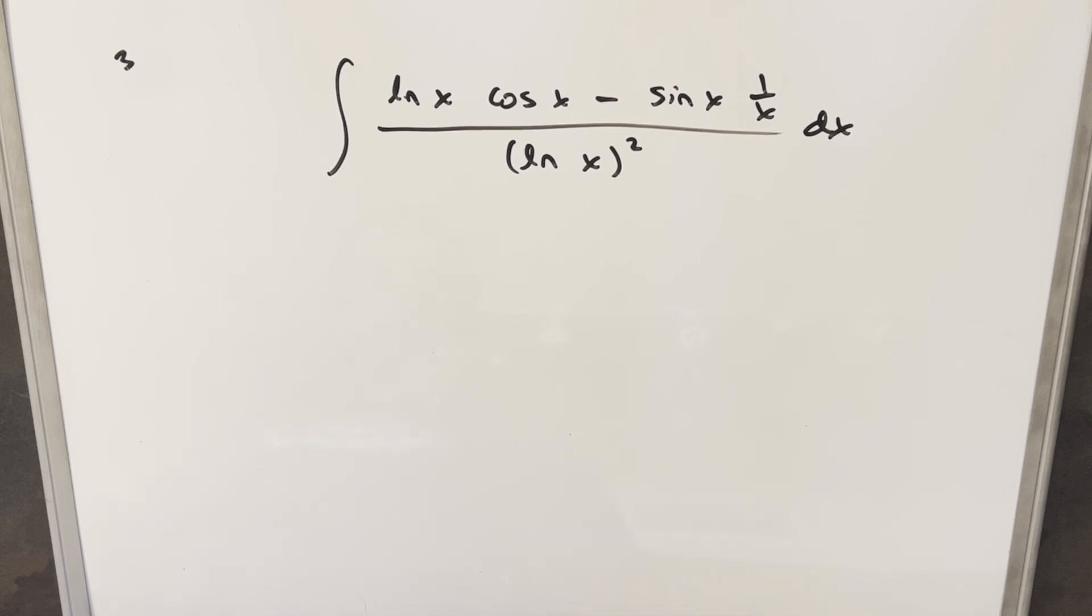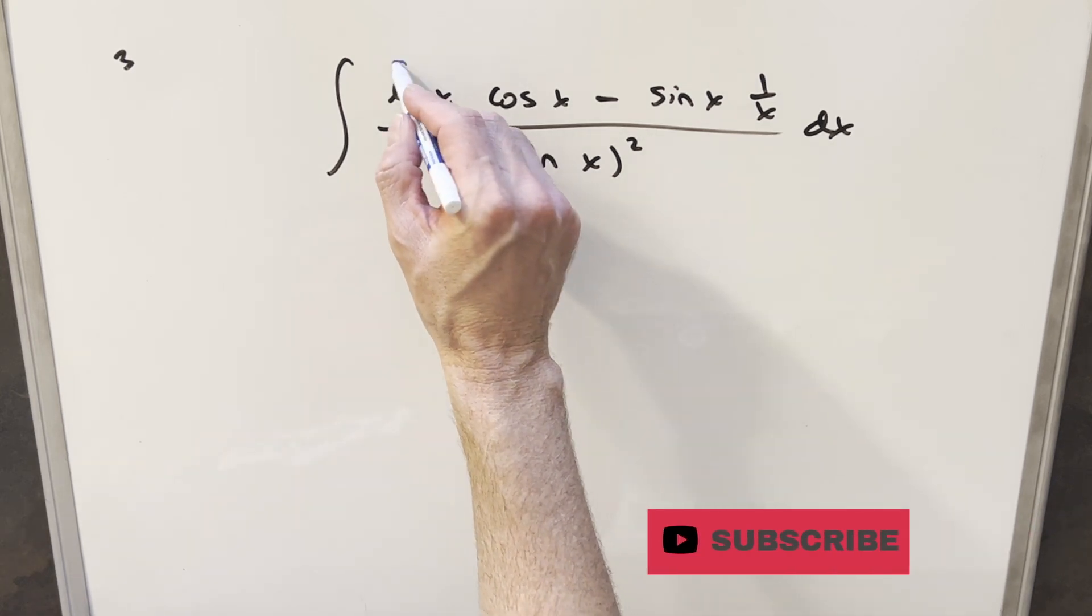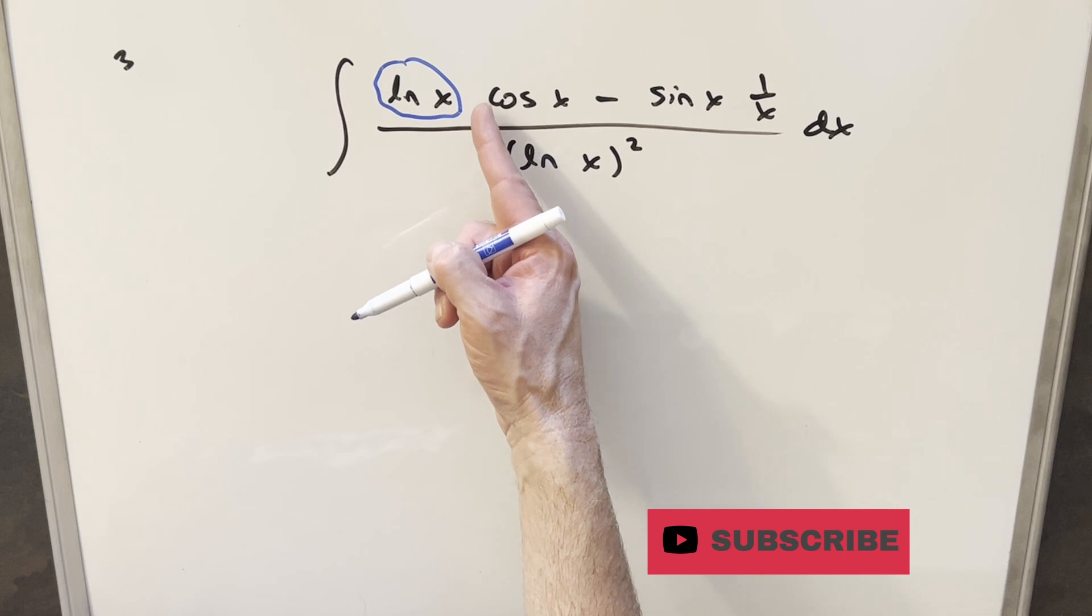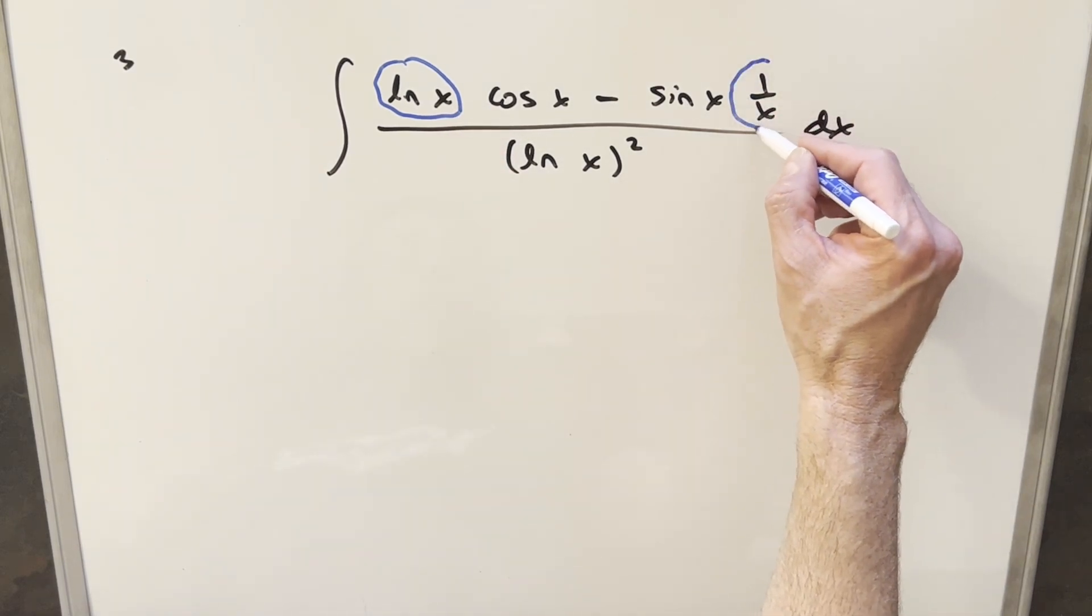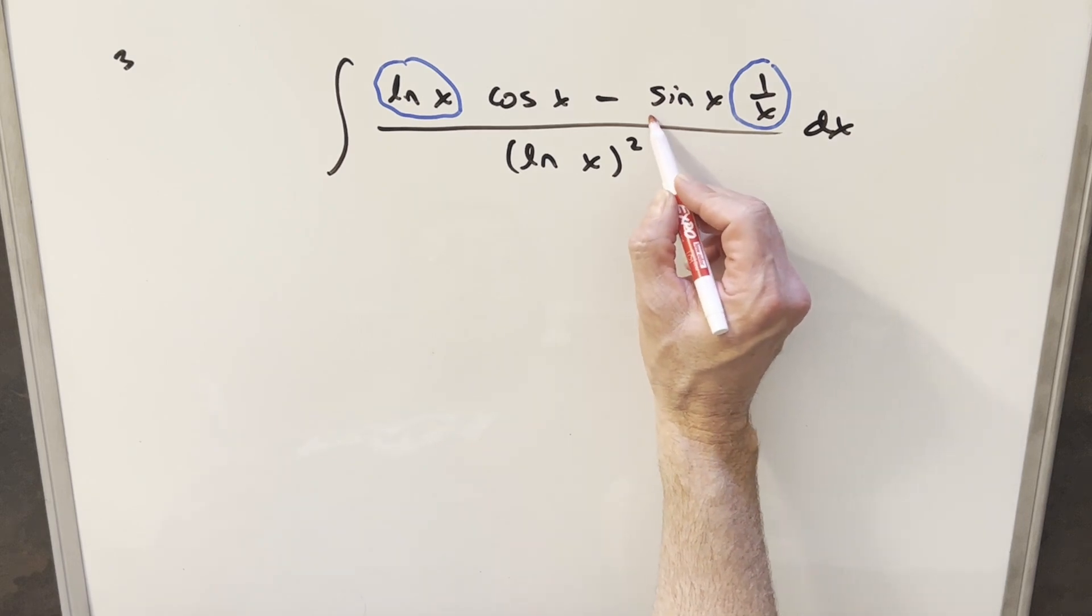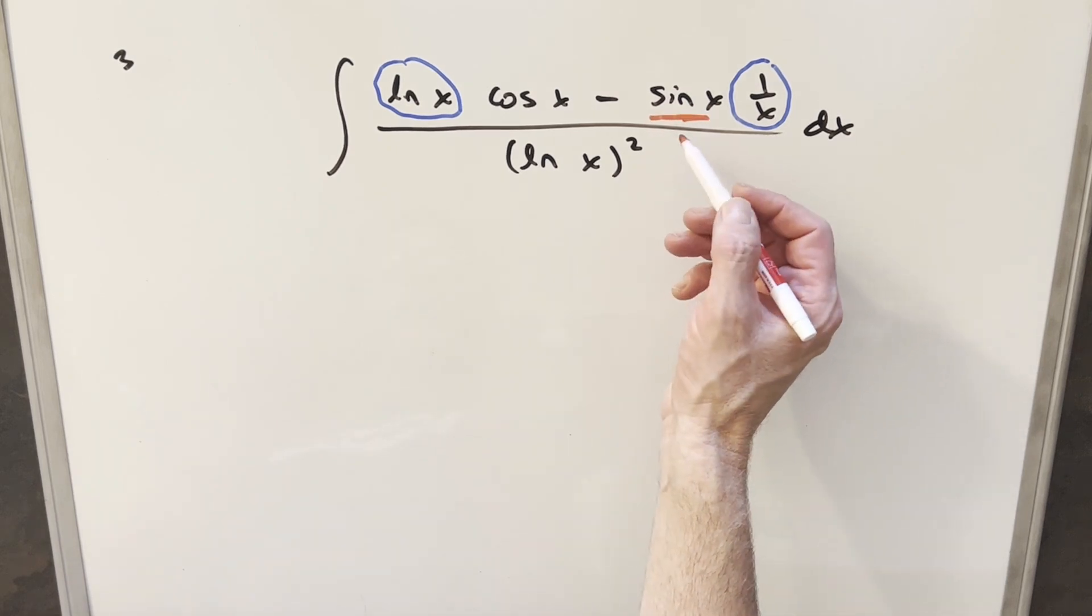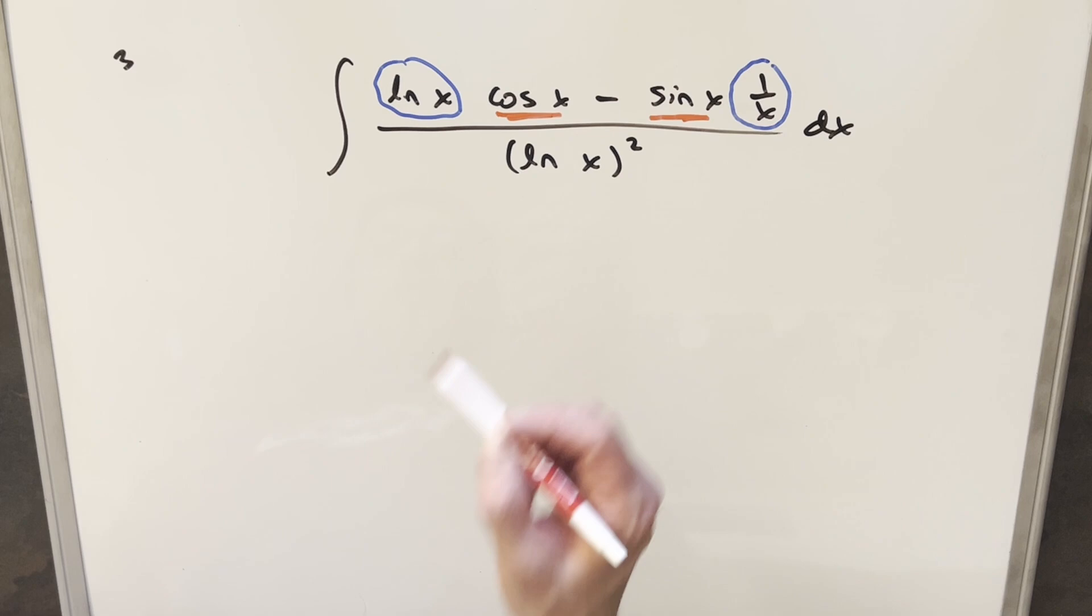A couple things that I noticed right away. We have here in the numerator natural log of x. The derivative of natural log x is one over x, and we have that right over here. And then over here we have sine x, but the derivative of sine x is cosine x, and we have this over here.